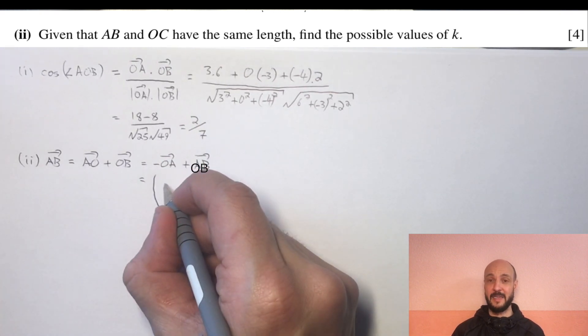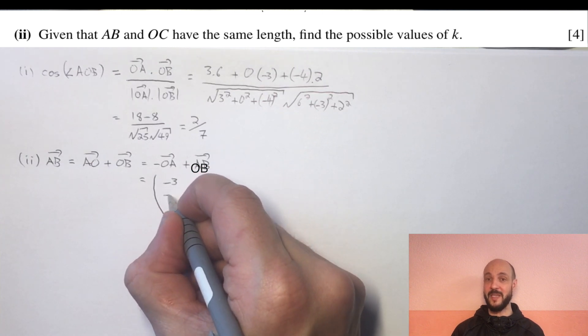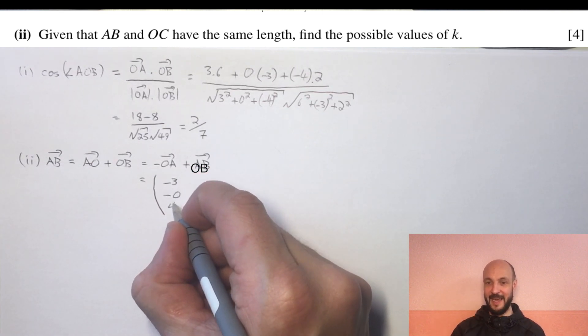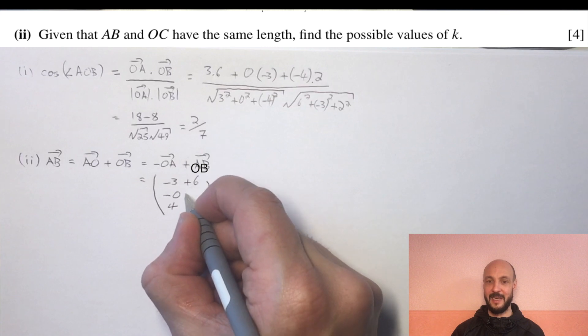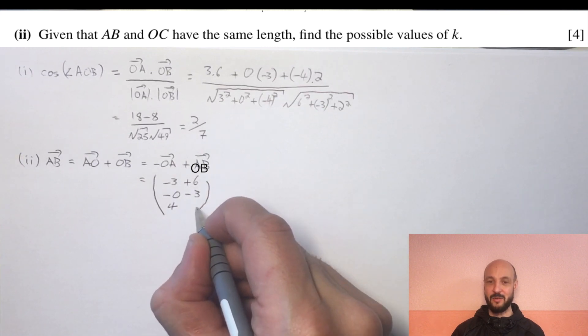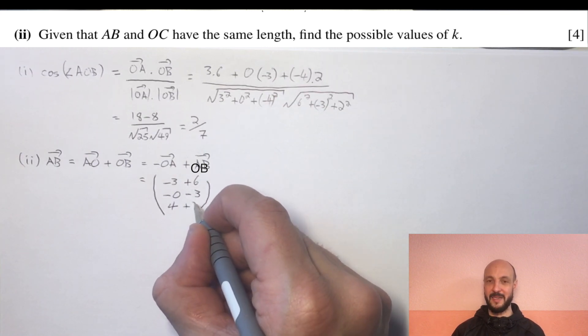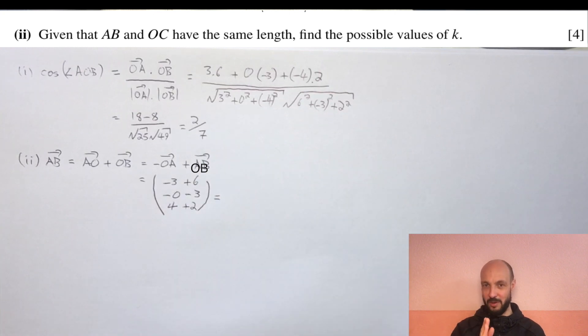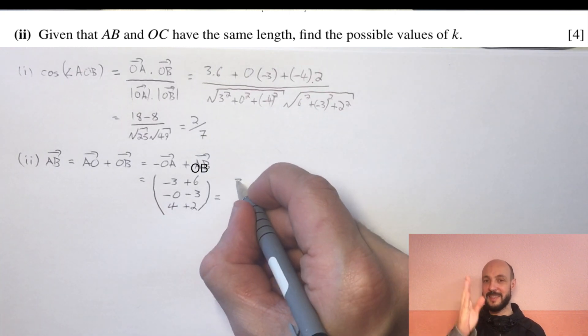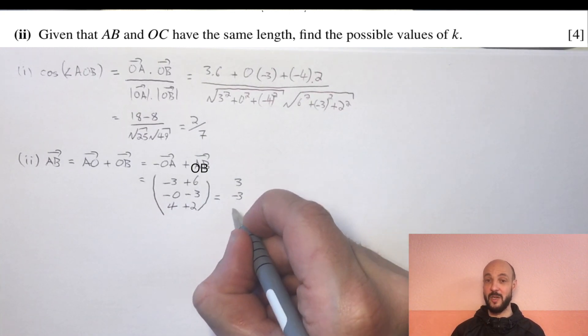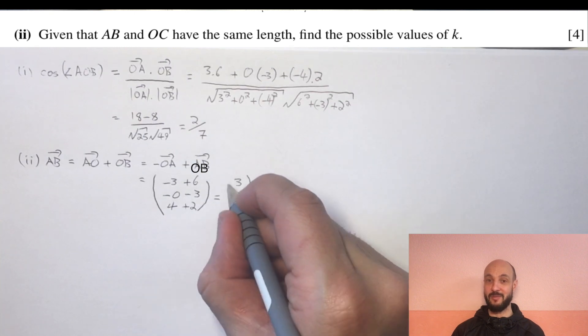We can draw that geometrically if we've forgotten. So AB equals minus OA plus OB which is, if we take the negatives of all the values in OA, minus 3, 0, 4, plus 6, minus 3, 2, which gives us 3, minus 3, 6.